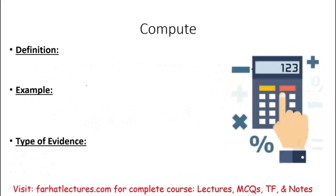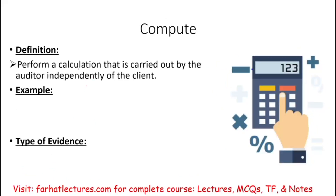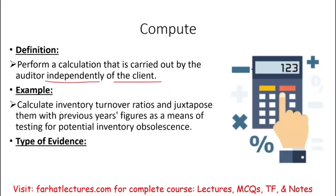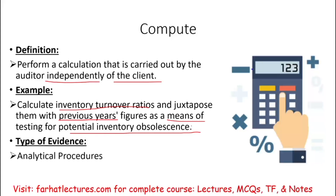Next is compute. Compute means to perform a calculation carried out by the auditor independently of the client. An example would be to compute inventory turnover ratios and compare them to the previous year as a means to test potential inventory obsolescence — perhaps the client did not perform this step and you are performing it independently. When you compute ratios, the type of evidence is analytical procedures.